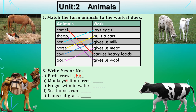Sentence B: 'Monkeys climb trees.' Yes — monkeys obviously climb trees. Sentence C: 'Frogs swim in water.' Yes — frogs can swim in water. Sentence D: 'Sea horses run.' No — horses can run, but sea horses cannot. Sea horses are animals that live in water; they swim, they do not run.